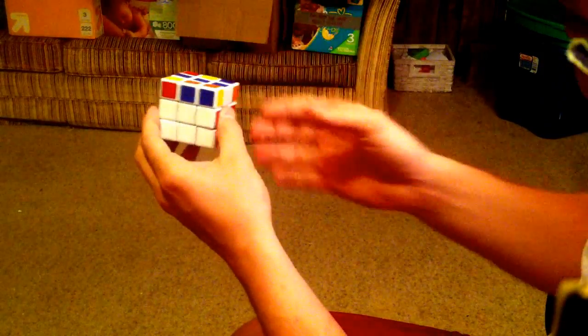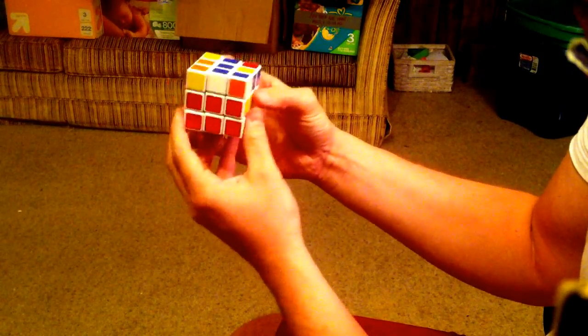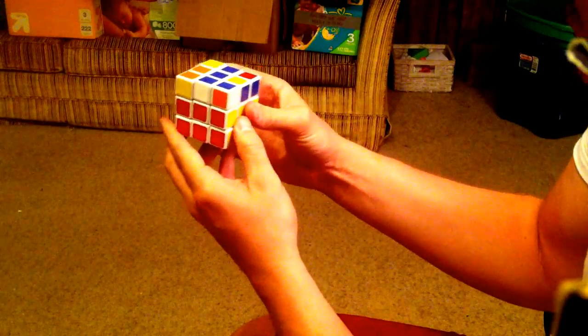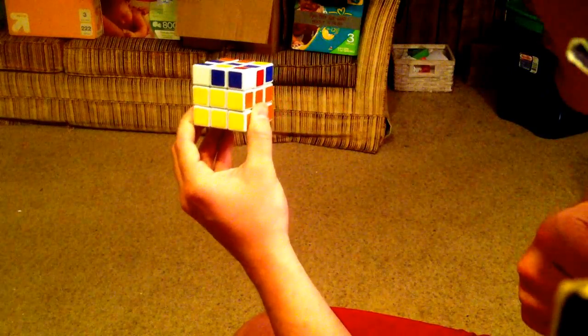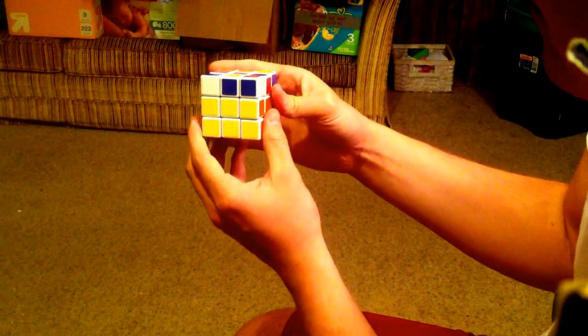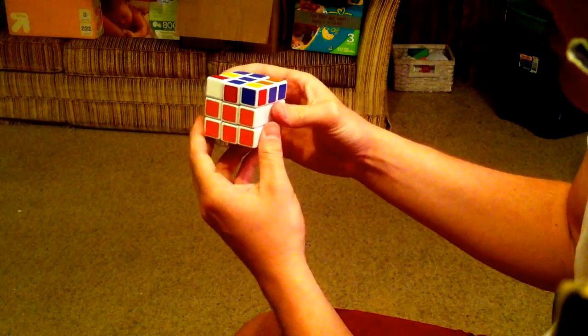That means, and the bar needs to face us like this. It cannot be facing us like that. That is bad. If it's like this, that's okay, as long as the bar is running like this when you're looking at the cube.